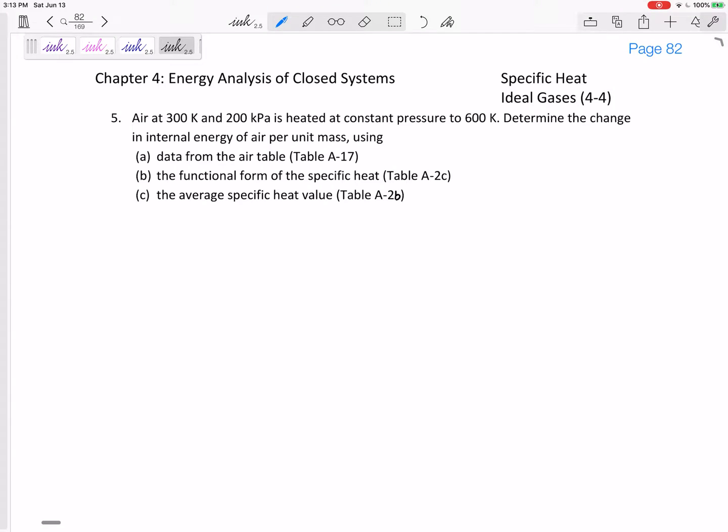Okay, so let's look at this. Air is initially at 300 Kelvin and 200 kPa. It's heated at constant pressure to 600 Kelvin, still at 200 kPa. Determine the change in internal energy of air per unit mass.